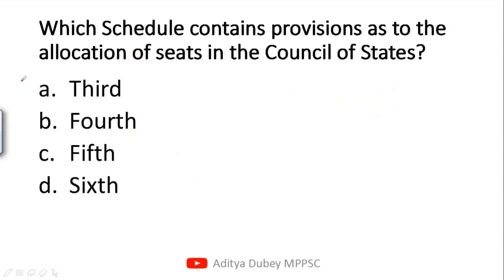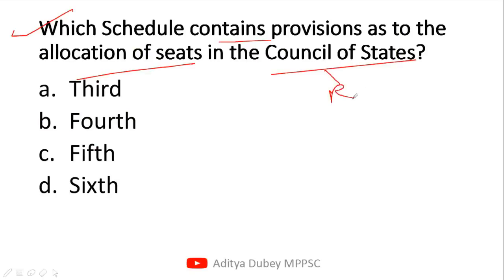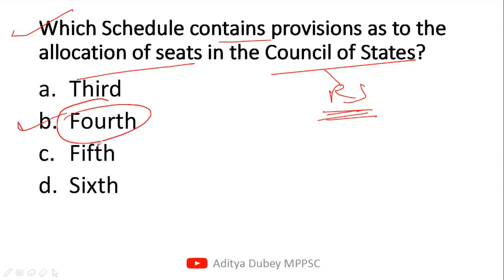The next question asks: which schedule contains provisions for the allocation of seats in the Council of State? Council of State means Rajya Sabha. Which schedule deals with the allocation of seats in Rajya Sabha? The correct answer is option B, that is the Fourth Schedule. The Fourth Schedule contains the provision for allocation of seats in the Council of State, i.e., Rajya Sabha.